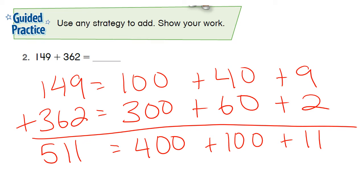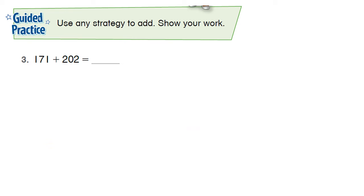Go ahead and pause now to complete number three and unpause it when you are ready to check your work or if you come into any problems. So pause now. Alright, number three: 171 plus 202. This one looks pretty simple so I'm going to use the partial sums but like I did before, count on.